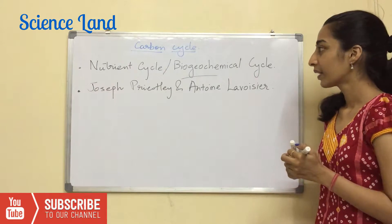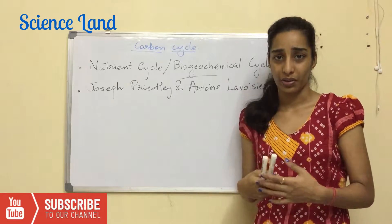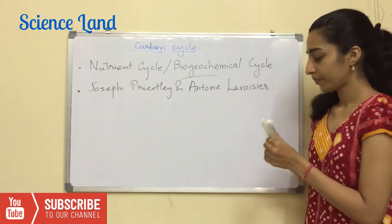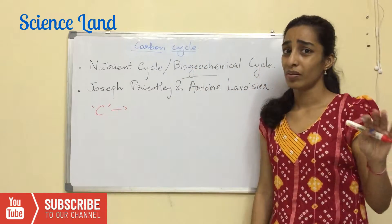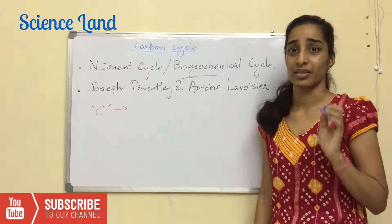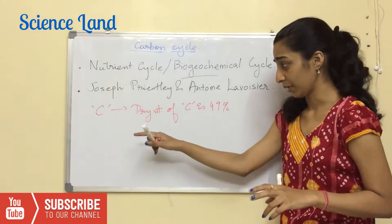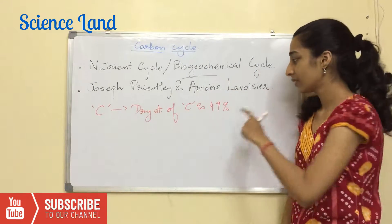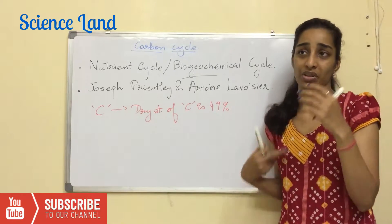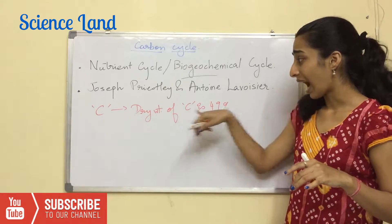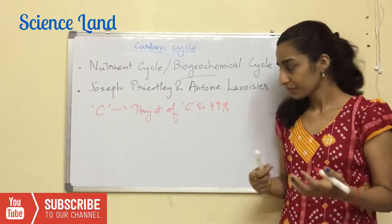Carbon, denoted by C, is a basic nutrient present in all organisms in some form or the other. The dry weight of carbon in an organism is 49%. The rest is oxygen, water molecules, etc. Carbon makes up 49% — imagine how important it is to any organism.